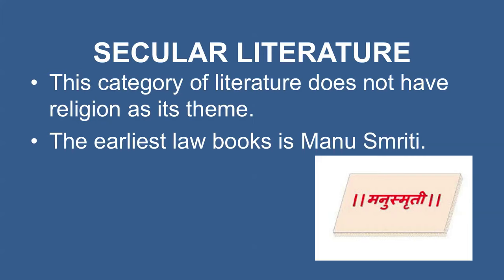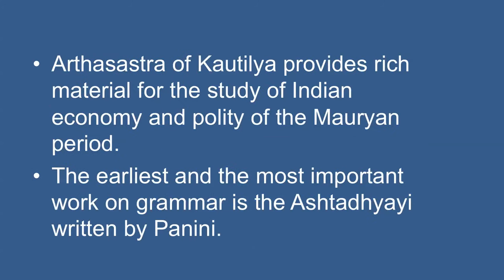Now we will discuss secular literature — this category does not have religion as its theme. To this class belongs the Dharmashastra, or the Law Book, which describes duties for different social groups and sets out punishments for persons guilty of theft, murder, adultery, etc. The earliest Law Book is Manusmriti. It was the first book translated by the British and formed the basis of the Hindu code of law.